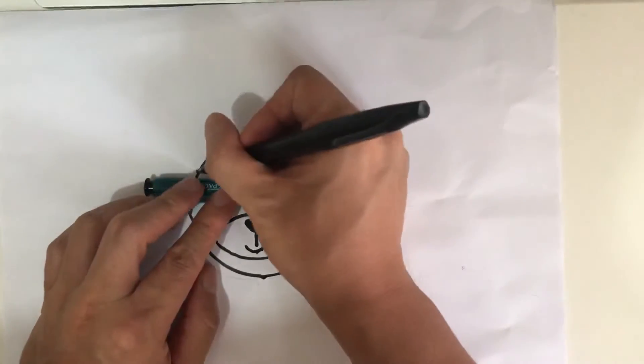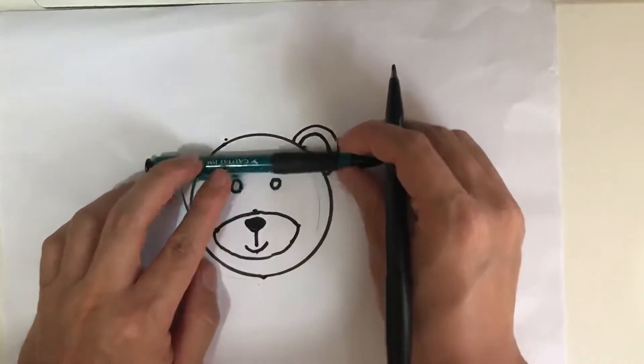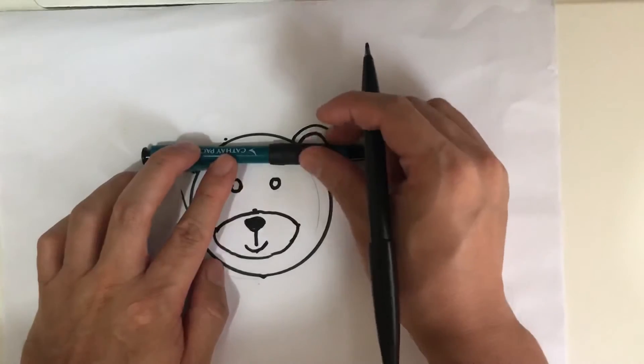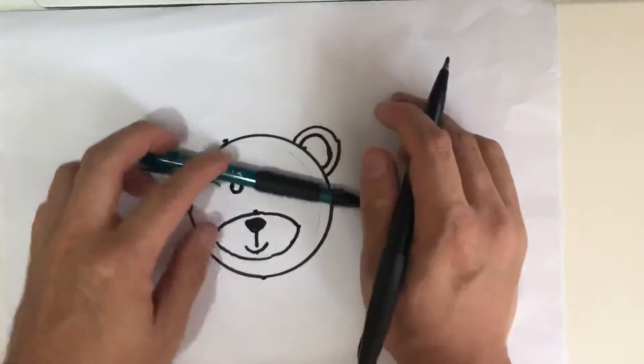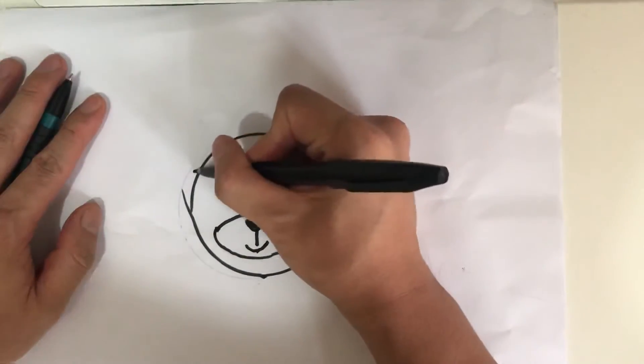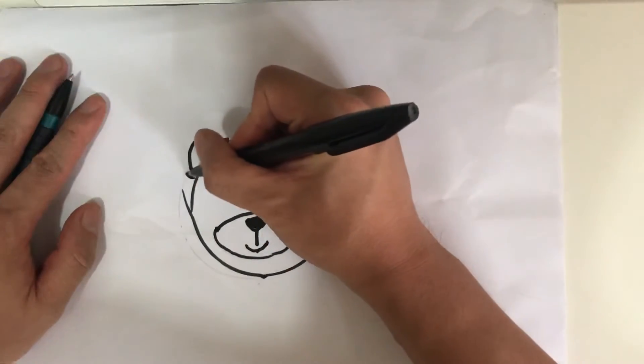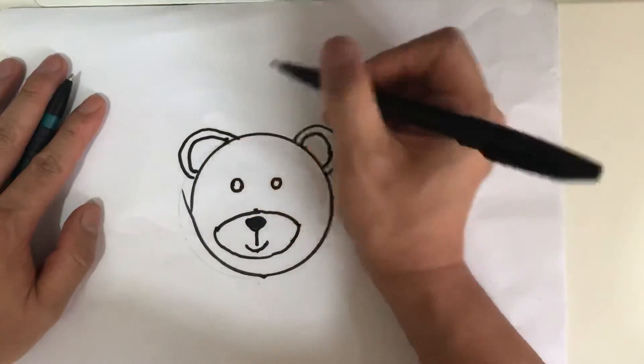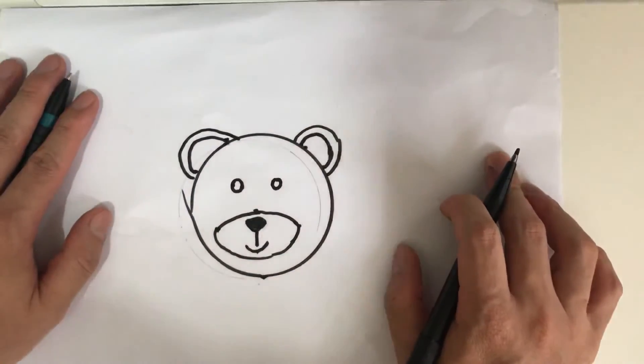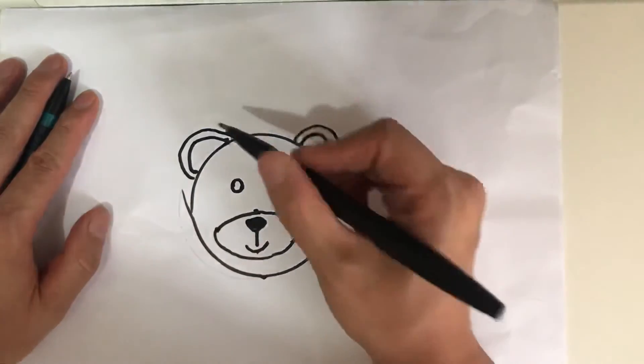That's how I get the measurement right, get the proportion right. So draw a semicircle, then draw another one. It doesn't need to be too precise. So let's color it in.